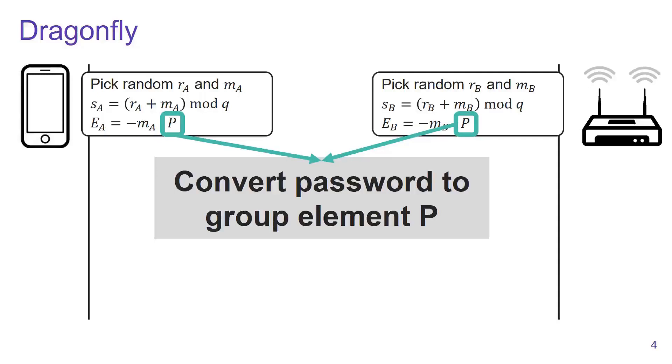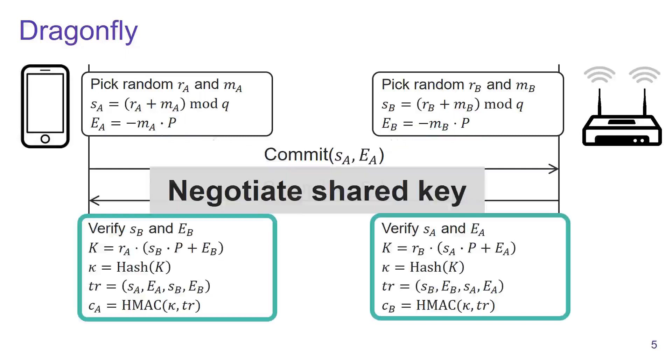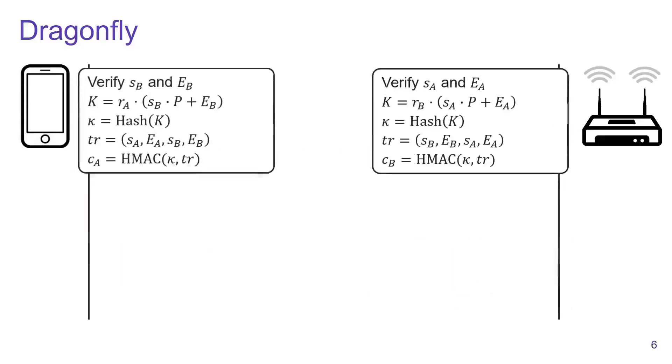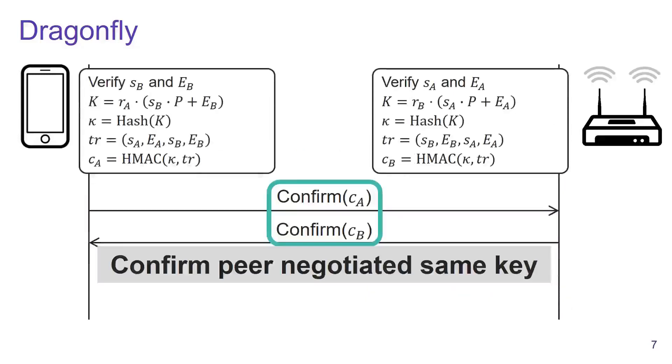Once this is done, we execute the commit phase of the handshake, which negotiates a session key. After this, the confirm phase is executed, which confirms that both peers negotiated the same session key and proves that they both possess the password.